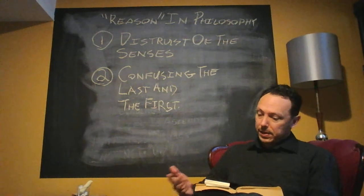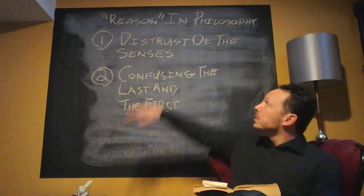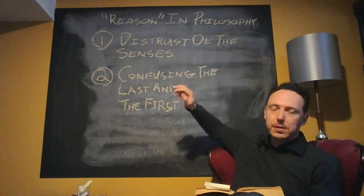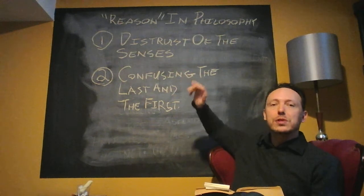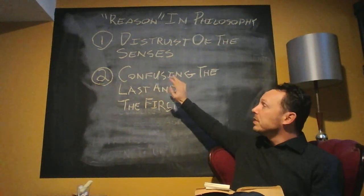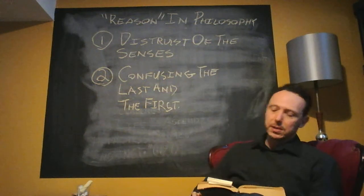He starts off with the first idiosyncrasy, there are two. First is distrust of the senses, which is actually an argument. He argues to the idiosyncratic distrust of the senses, and the second is confusing the last and the first, and we'll say a couple of words about that.